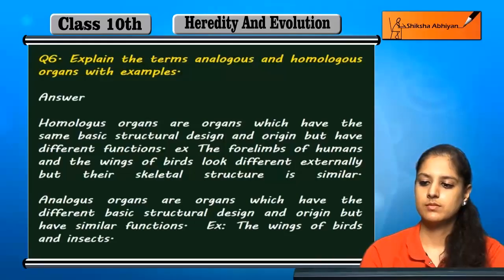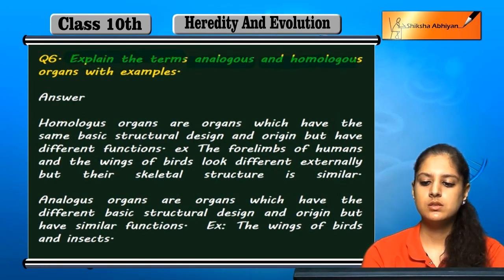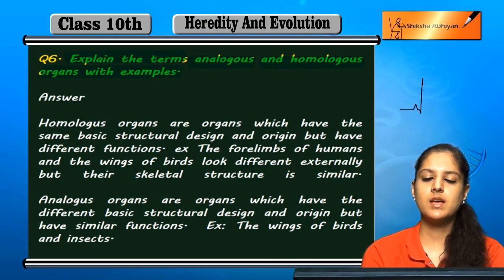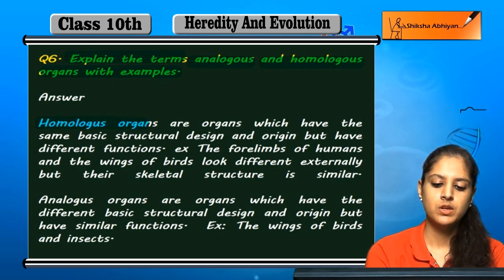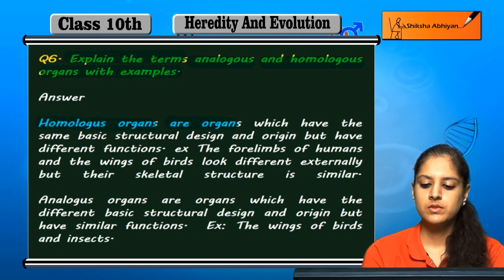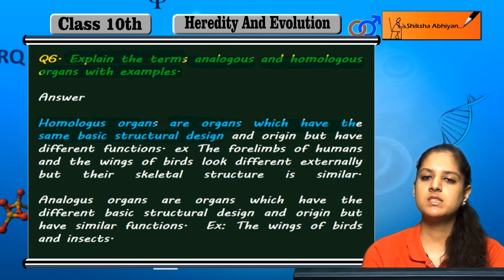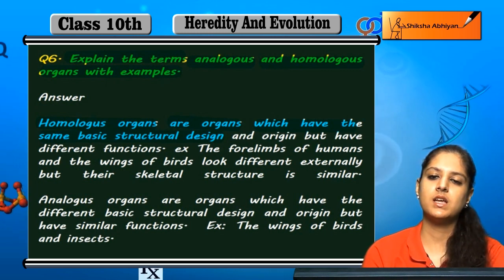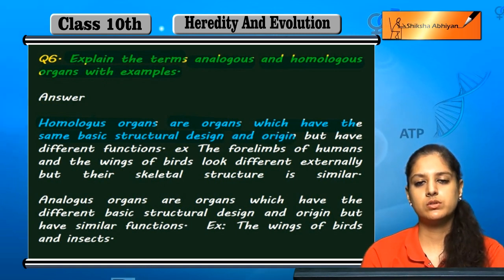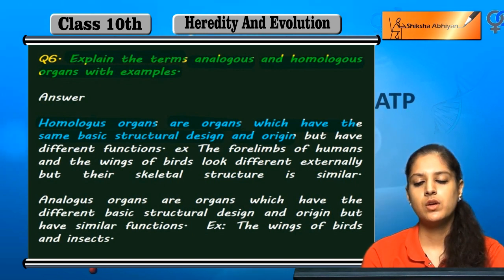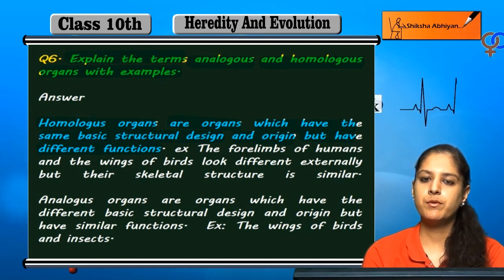Question number six: explain the terms analogous and homologous organs with examples. Homologous organs are the organs which have the same basic structural design — their basic structure and origin are the same — but they have different functions.